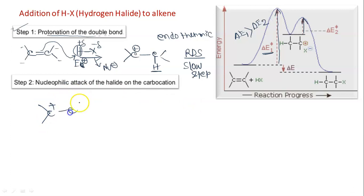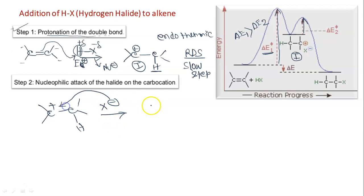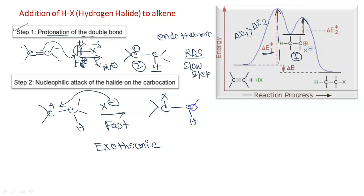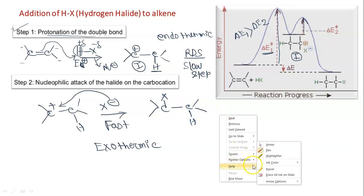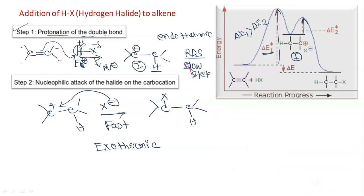Now we will write the species again. This is actually our intermediate, marked as I. X minus is now free in the medium - that is the negative part of our reagent. This X minus will attack this C plus. This step is exothermic. Finally, we are getting a C-X bond. This is the second step activation energy, and this is the final product.